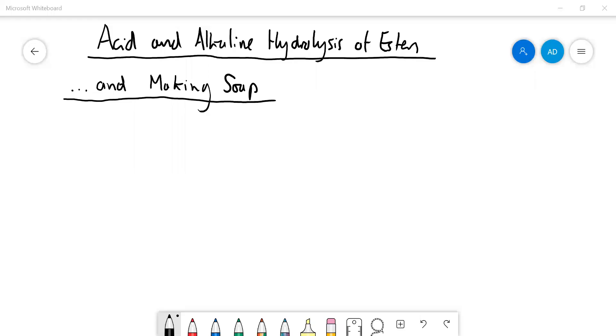Okay, this video is going to be about making soap from triacylglycerides, but before we do that we need to talk about acid and alkaline hydrolysis of esters. First of all, this word hydrolysis - what does it mean? It means splitting with water.